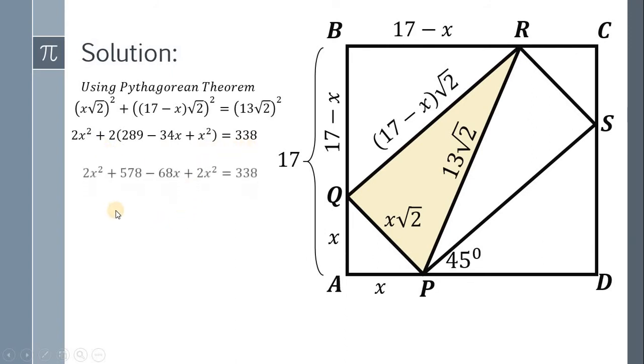Distribute the 2 and we have 2X² plus 578 minus 68X plus 2X² equals 338. Combine similar terms and we get 4X² minus 68X plus 240 equals 0.